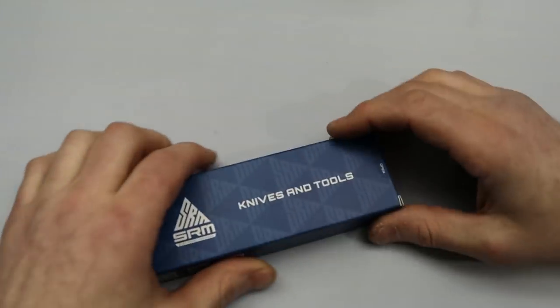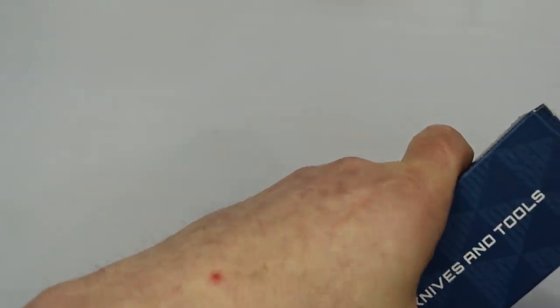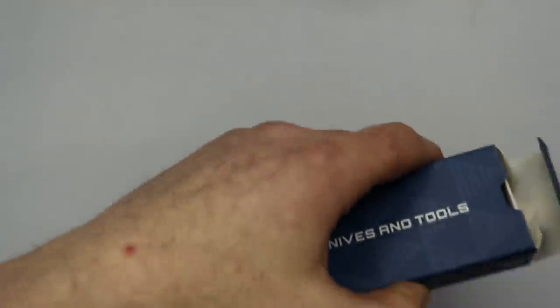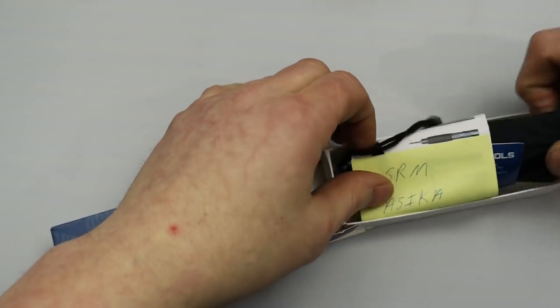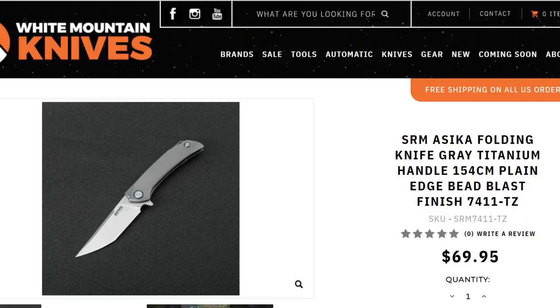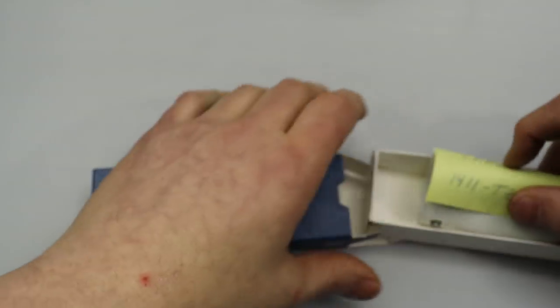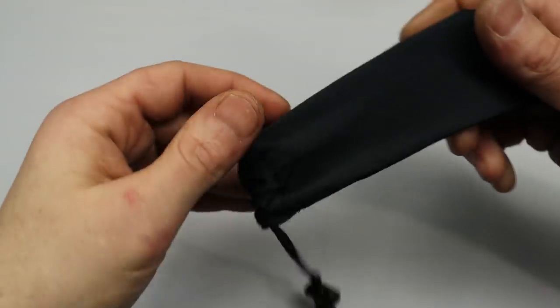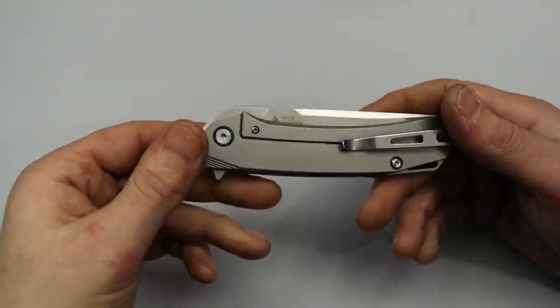Next is an SRM knife. Sam Remnew I think that is. The SRM knives. Okay so this is the SRM Haseka Large 1411TZ.